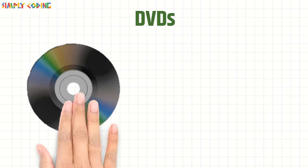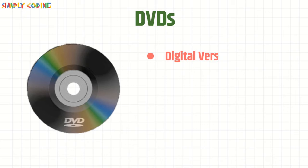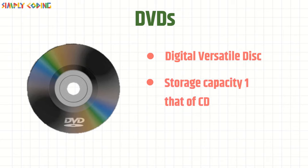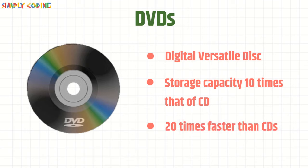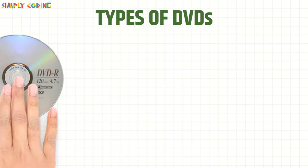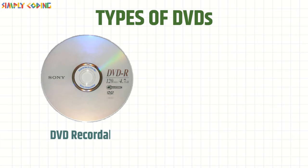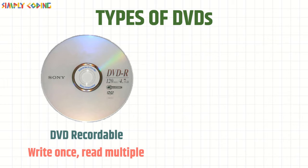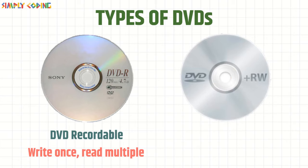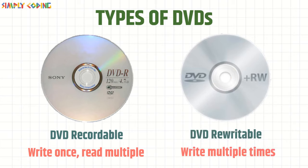Next we will cover DVDs. DVDs stand for Digital Versatile Disk and they have a storage capacity almost 10 times that of a CD and are 20 times faster than CD. They come in three types: DVD-R or DVD recordable, where data can be written only once and then read multiple times; and DVD read-write or DVD re-writable, where the data can be written multiple times.